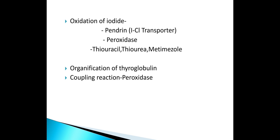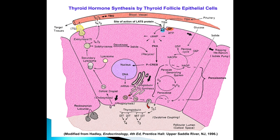Organification is how MIT and DIT are formed. This combination results in the coupling reaction in the presence of peroxidase. You can see how the whole iodide trapping takes place — converted into iodine and iodothyrosine forming in the presence of peroxidase. From the thyroglobulin, two DIT form T4, and DIT plus MIT form T3. This is the process of oxidative coupling.